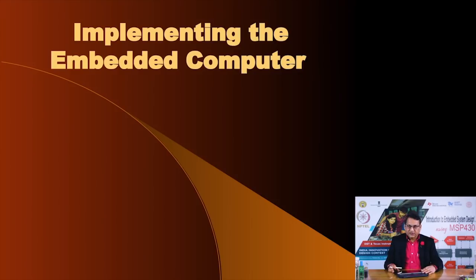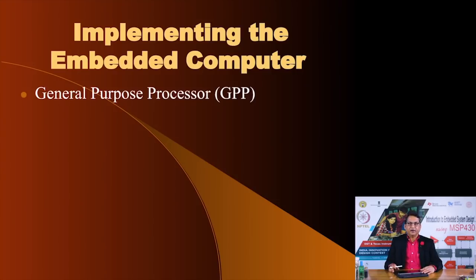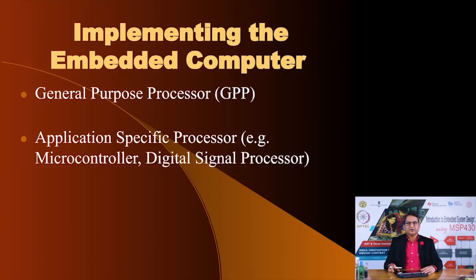A microcontroller is a popular method of implementing the embedded computer, but there are other methods. The first is using a general purpose processor — a microprocessor. The second is using an application-specific processor, such as a microcontroller or a digital signal processor (DSP), which can perform digital signal processing more efficiently than a general purpose processor. The third method is a single purpose computer.